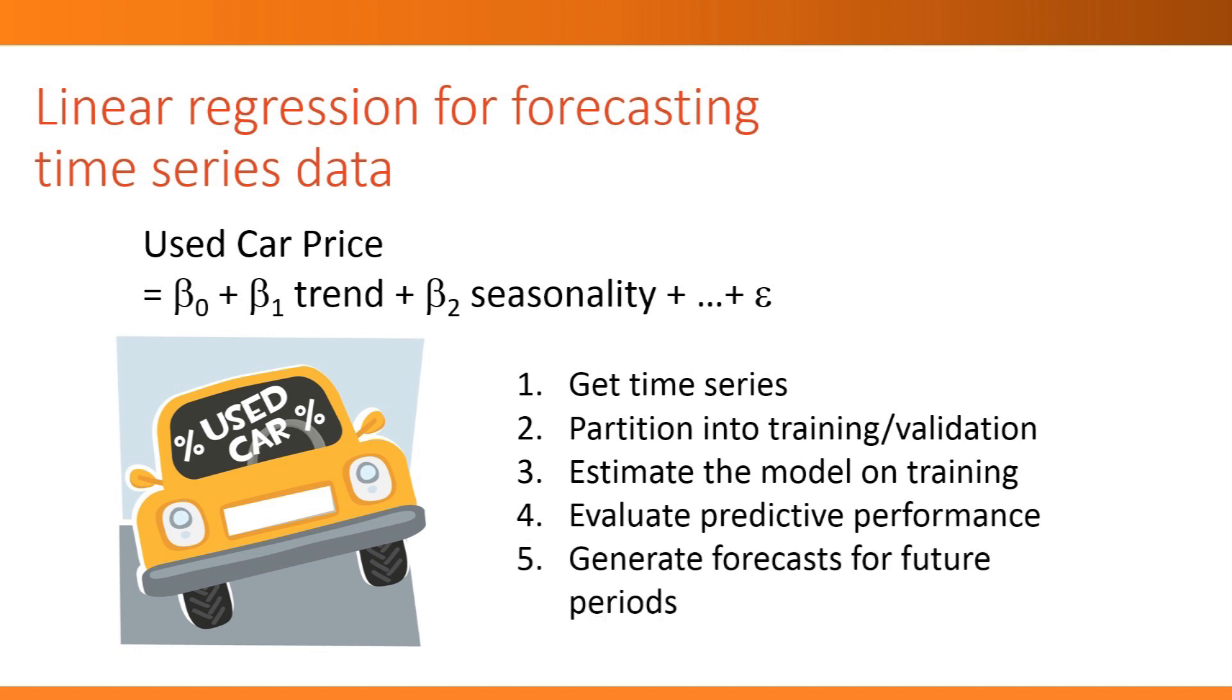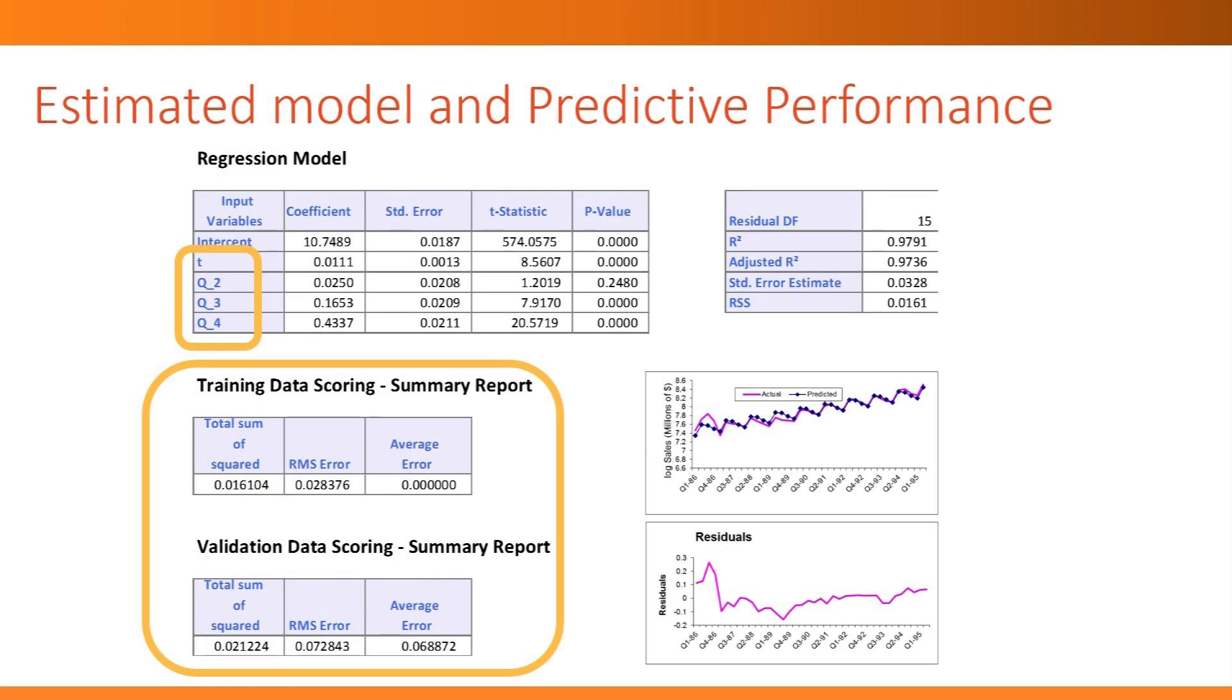Lastly, when we're done, we can use this model for generating forecasts for future periods. Here's an example of an output from a forecasting model using regression. You can see that our predictors here, the independent variables, are not the typical features that we saw earlier on. We also see that we're using the training and validation scoring and metrics to evaluate performance, and we have our performance charts as well.